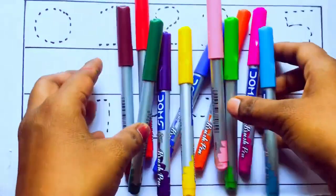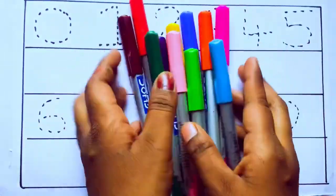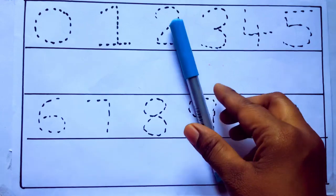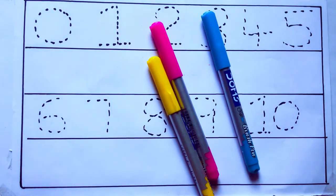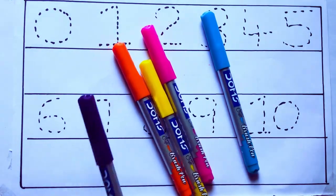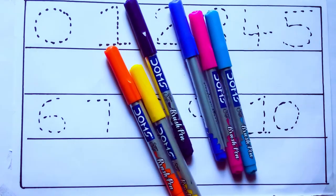Let's learn some colors. These are all the color pencils. Let's learn the names. Sky blue color, pink color, yellow color, orange color, violet color, blue color.